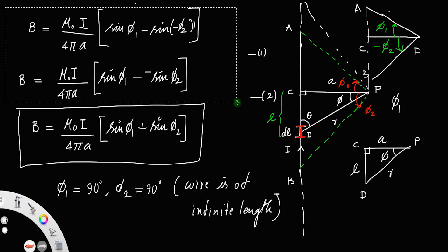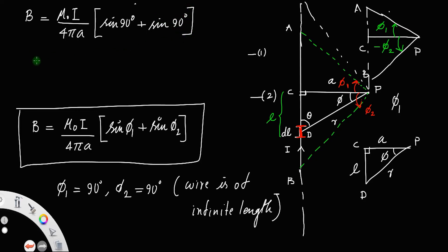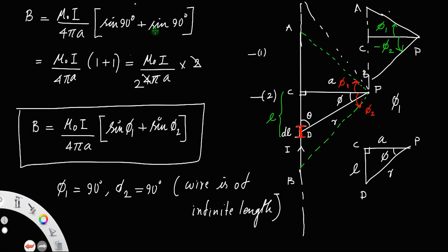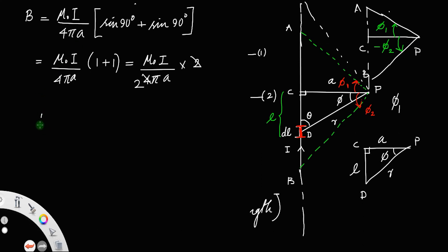If you substitute the values of φ₁ and φ₂ in this equation, you get B equals μ₀i divided by 4πa, where sin φ₁ is sin 90 equals 1, and sin φ₂ is also sin 90 equals 1. So B equals μ₀i by 4πa times (1 plus 1) equals μ₀i by 4πa times 2. Cancelling 2 and 4, B infinity equals μ₀i divided by 2πa. This represents the magnetic field of an infinitely long conductor at the point P.